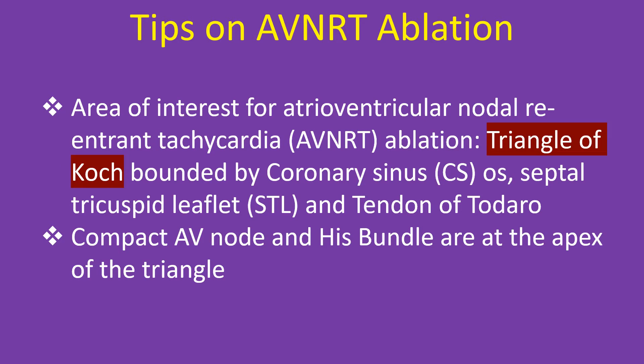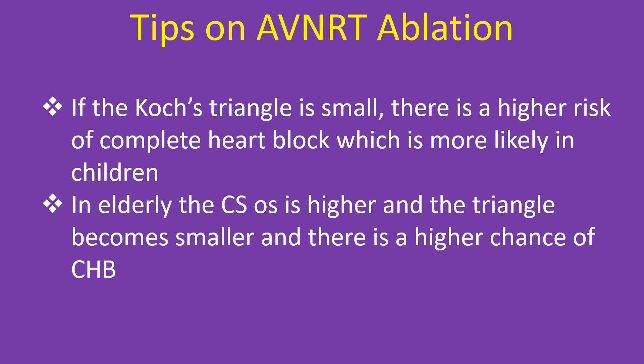The area of interest for AVNRT ablation is the triangle of Koch, bounded by the coronary sinus ostium, the septal tricuspid leaflet, and the tendon of Todaro. The compact AV node and His bundle are at the apex of the triangle. If the triangle of Koch is small, there is a higher risk of complete heart block, which is more likely in children.